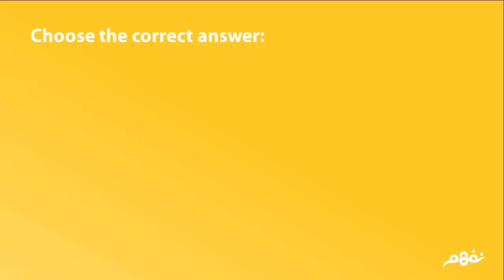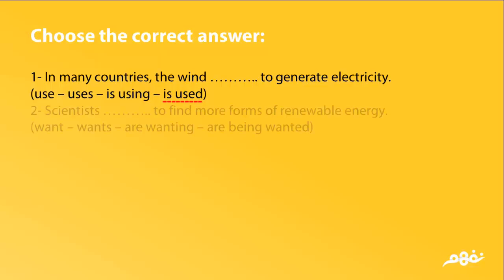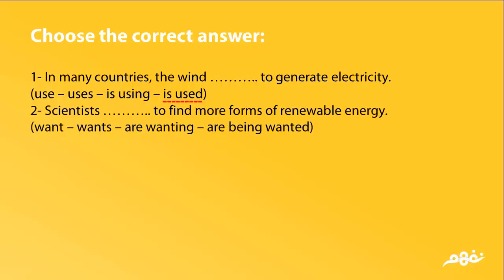Now choose the correct answer. Question 1: 'In many countries, the wind __ to generate electricity.' Options: Use / Uses / Is Using / Is used. The answer is 'is used.' Question 2: 'Scientists __ to find more forms of renewable energy.' Options: Want / Wants / Are Wanting / Are being wanted. The answer is 'want.'